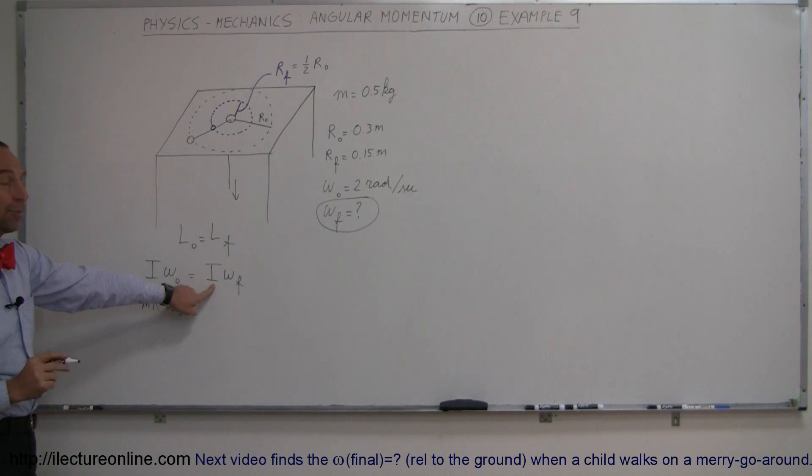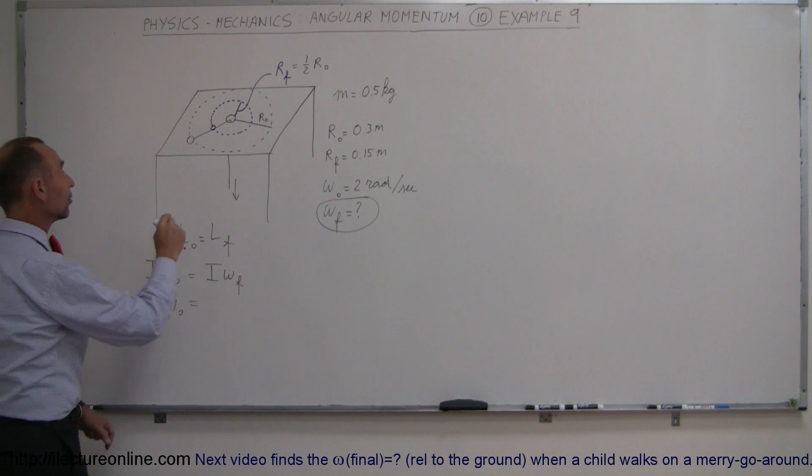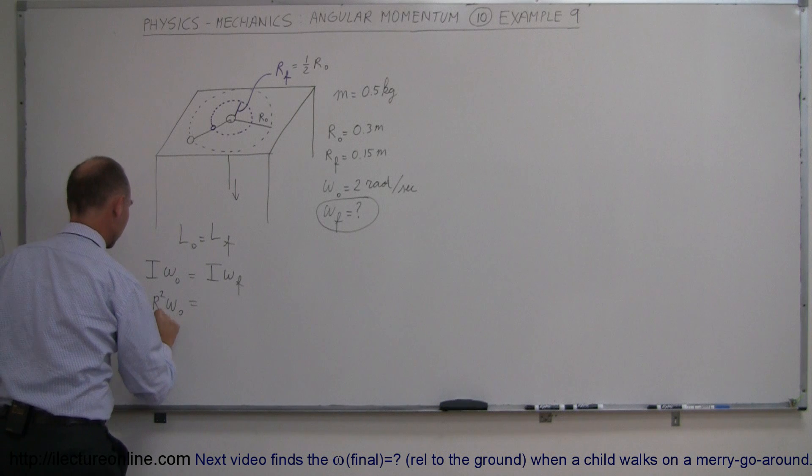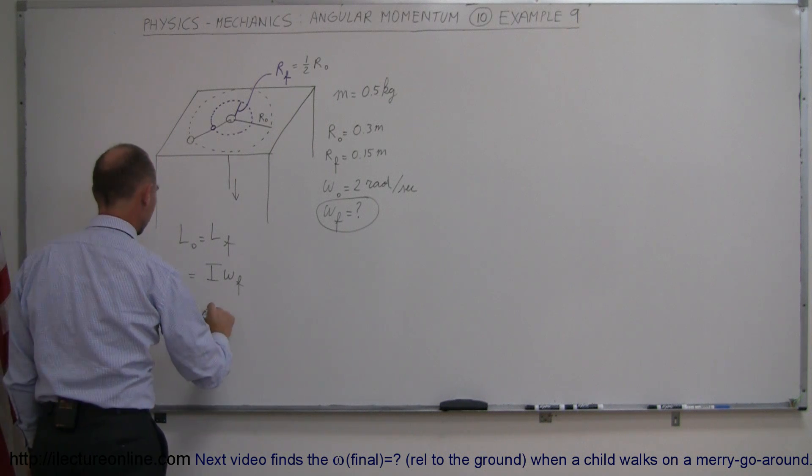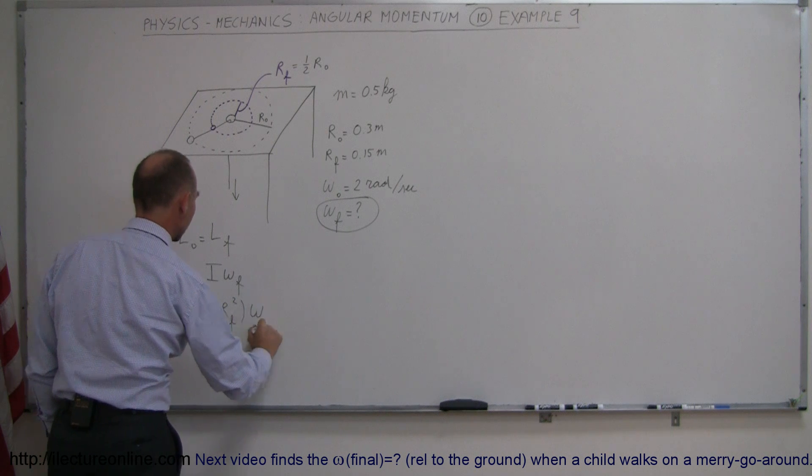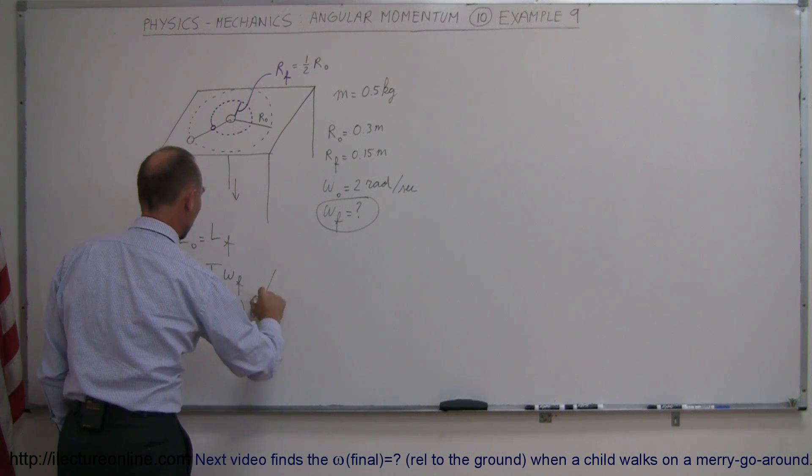So is the I still the same? No, of course the I is going to be different now because now the puck is only at half the distance away from there. So if we call this r initial then we can say that this is equal to m r final squared times omega final and that is of course what we're looking for.